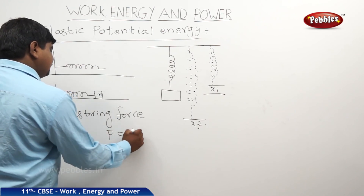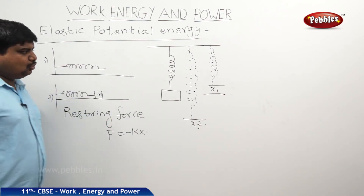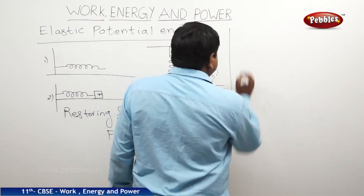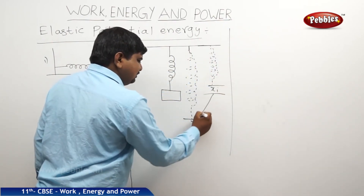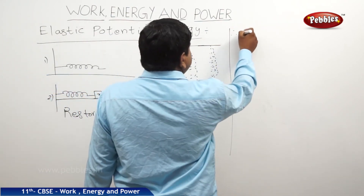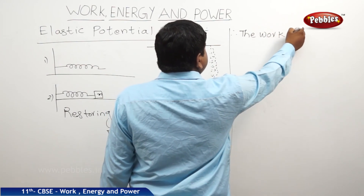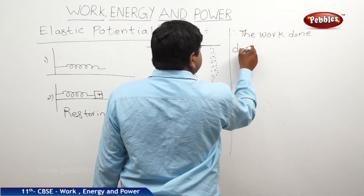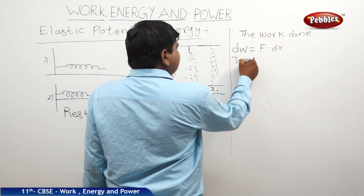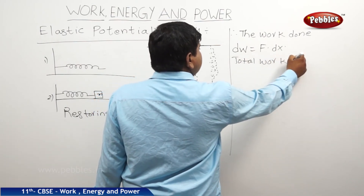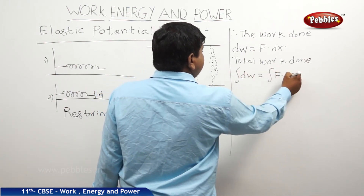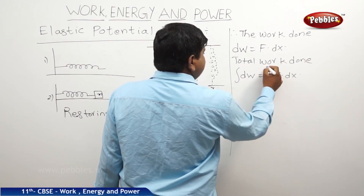Let us take the restoring force f is equal to minus kx. So what is the work done in this compression to expansion of the spring? Let us take the small displacement from xi to xf under the load applied. Therefore, the work done dW is equal to f dot dx, and total work done is the integral of f dot dx from xi to xf.